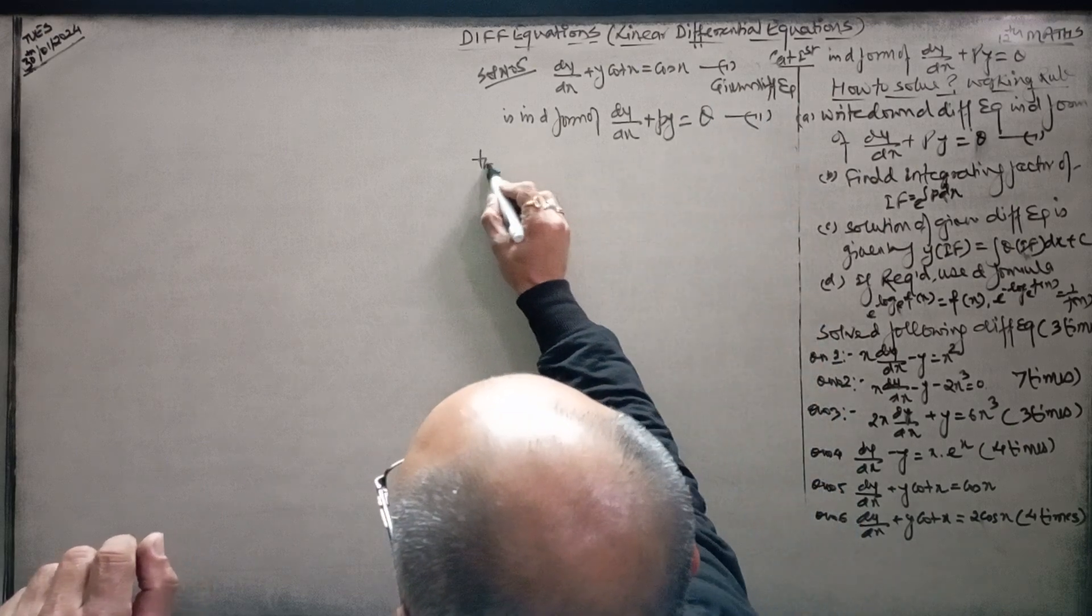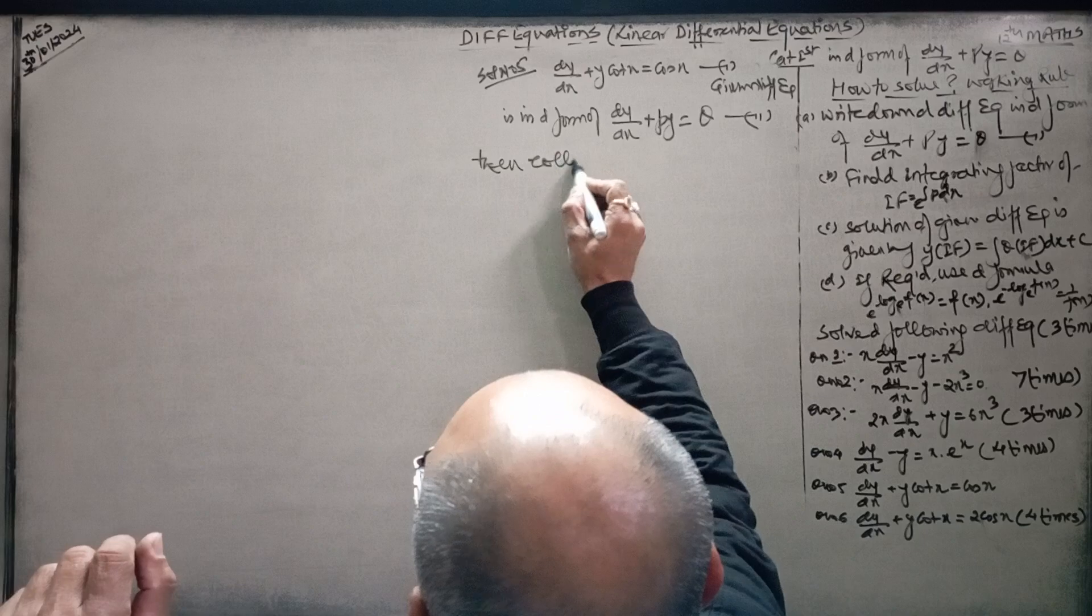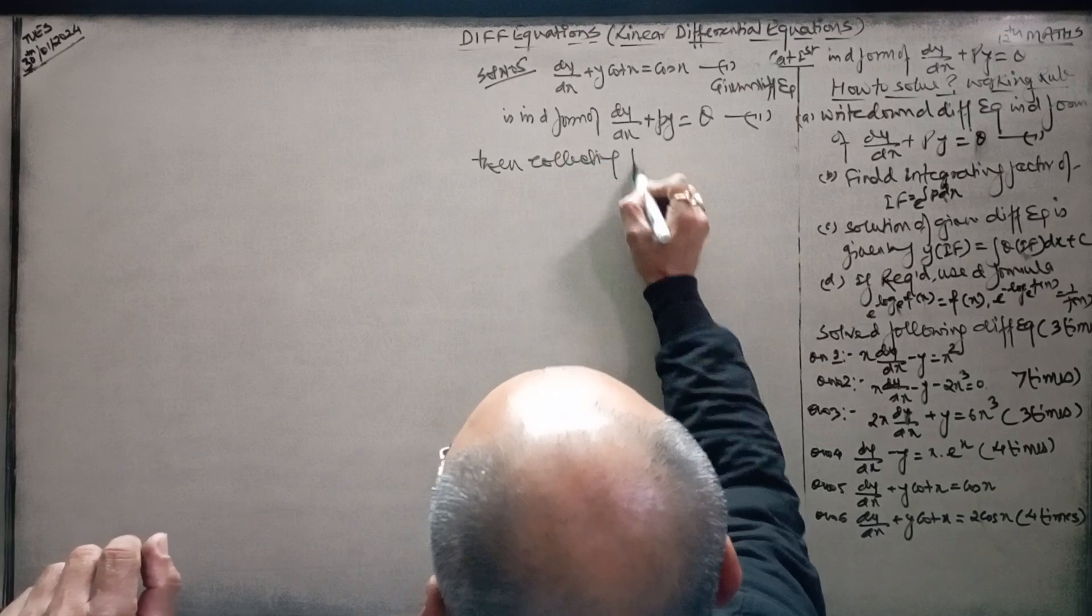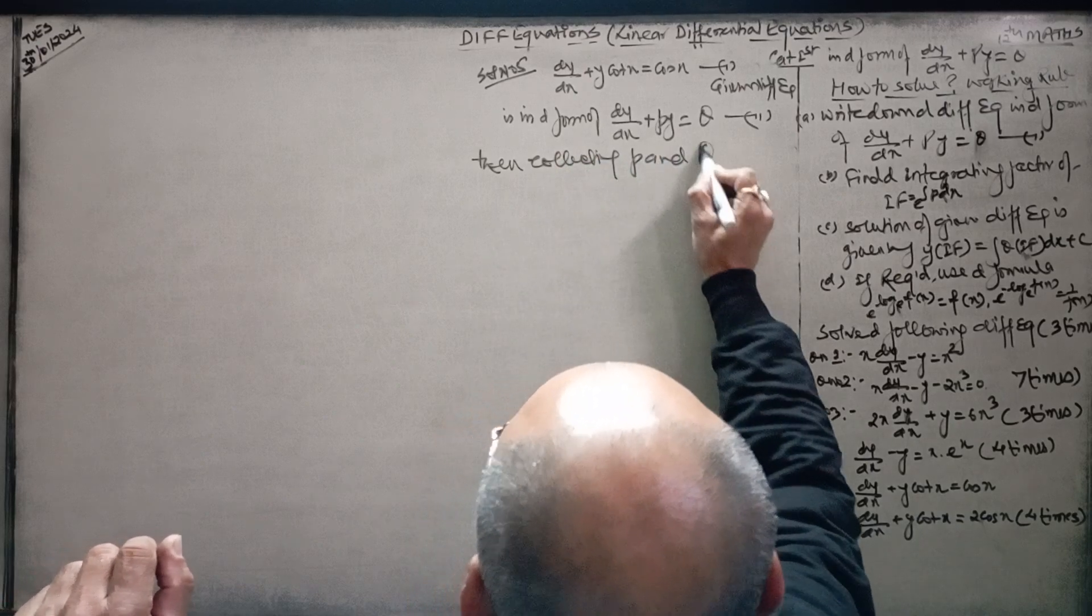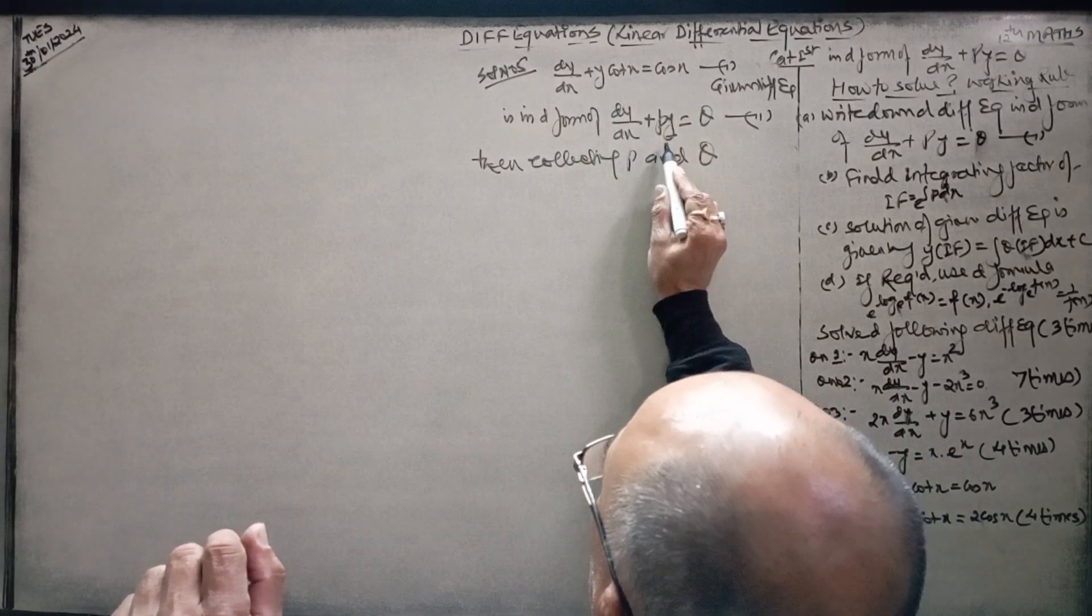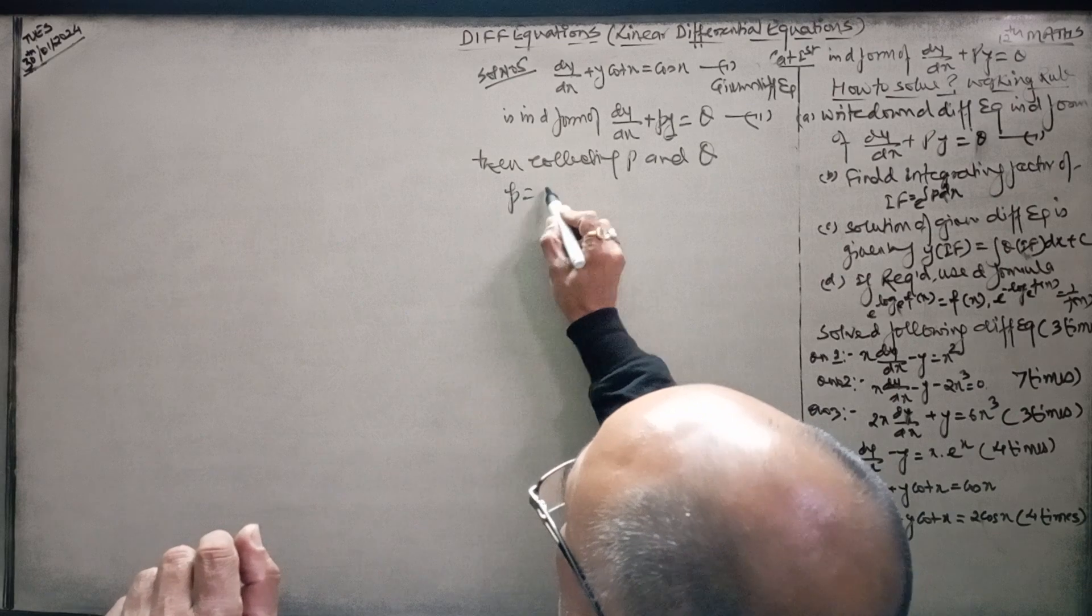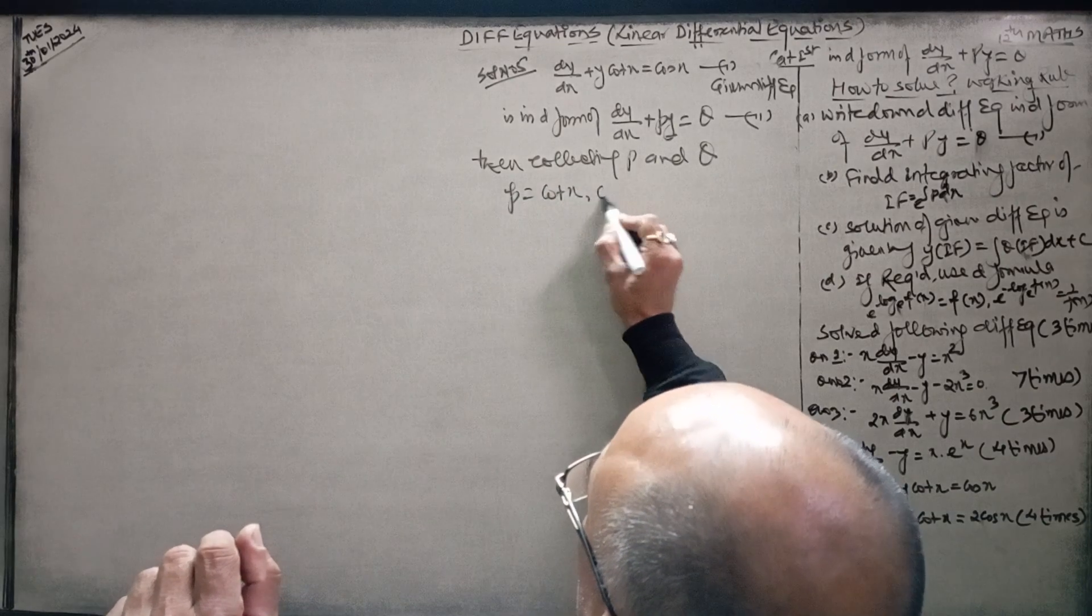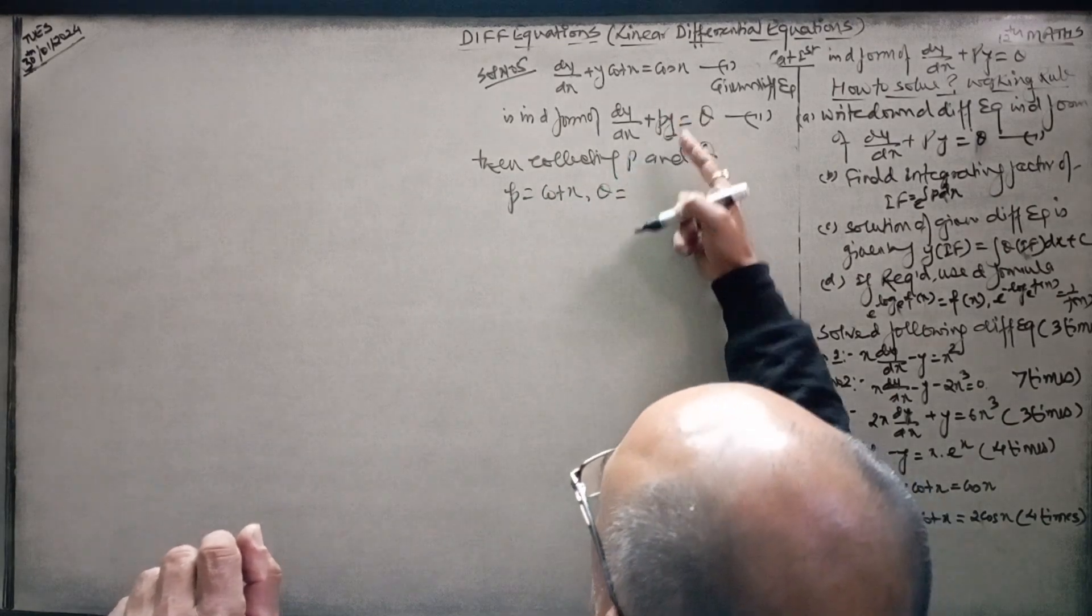Then, collecting P and Q. You have to find out the value. P is equal to cot x, and Q is equal to the right side.